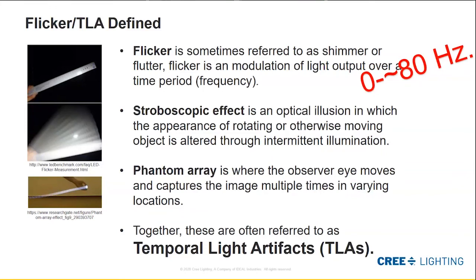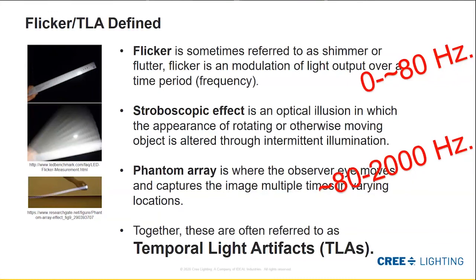As events get faster, something called the stroboscopic effect occurs — an optical illusion where you can see a ruler being waved and capture multiple images of it, due to that intermittent illumination or modulation of light over that frequency. There's also something called phantom array, where the observer's eye is actually moving and catching multiple images at varying locations. Those happen from 80 to about 2,000 hertz. As a whole category, this is all temporal light artifacts — time-based light artifacts, some type of modulation in light and time.